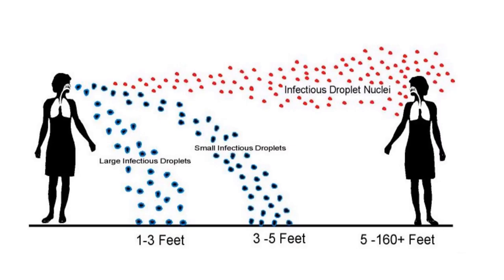Droplets remain suspended in the air until they evaporate, leaving droplet nuclei that contain bacteria related to respiratory infections. Droplet nuclei can contaminate surfaces in a range of 3 feet and may remain airborne for 30 minutes to 2 hours. If inhaled, the droplet nuclei can penetrate deep into the respiratory system.